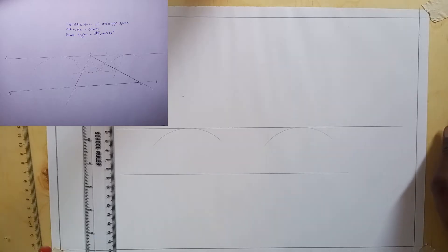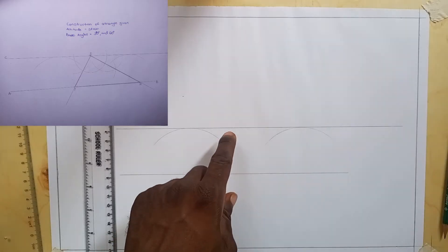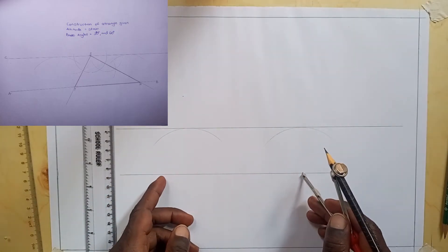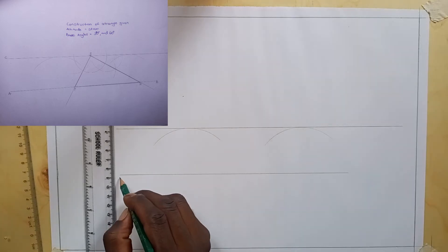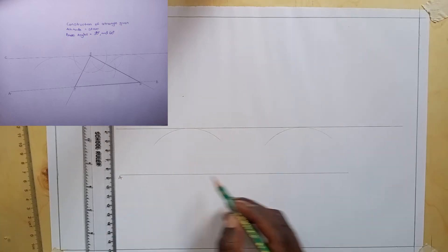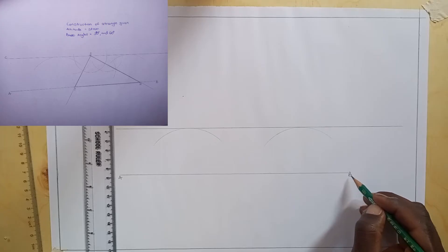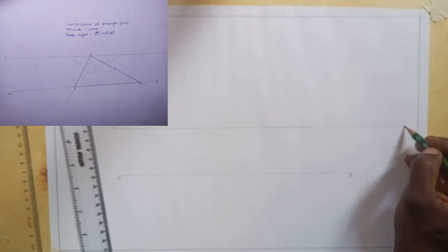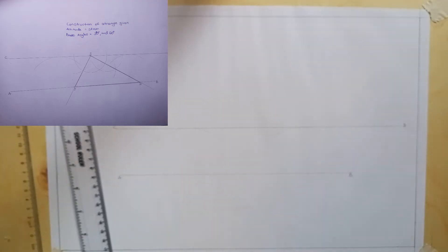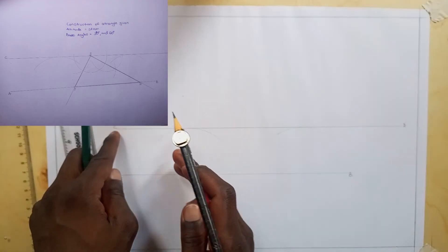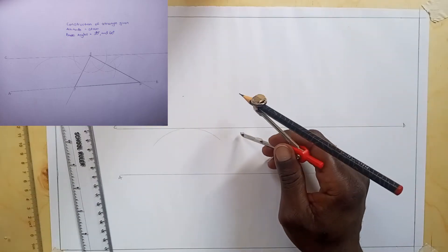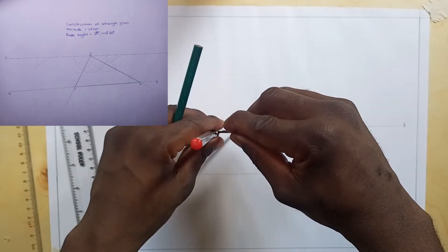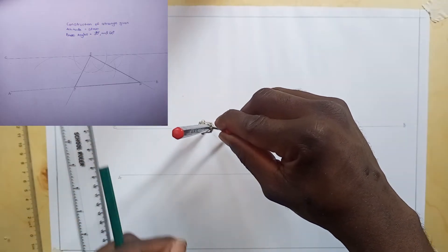At any point along this line that we have just drawn that is parallel to this line, maybe let's call this A, B, and this one C, D. So at any point along this line CD, we are going to construct a 30 degree angle and a 60 degree angle.